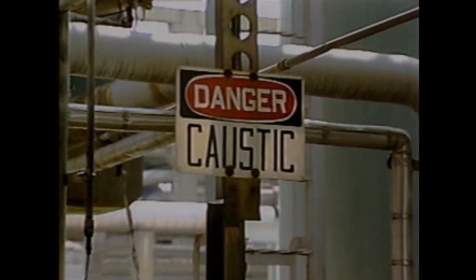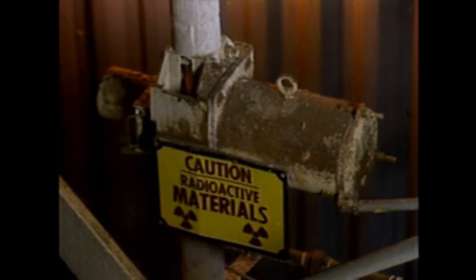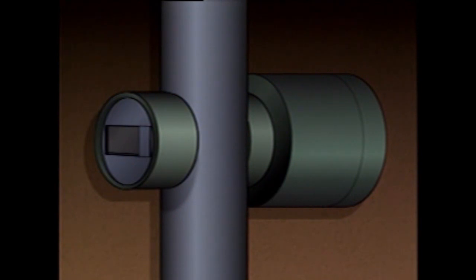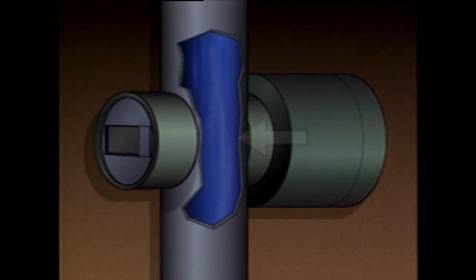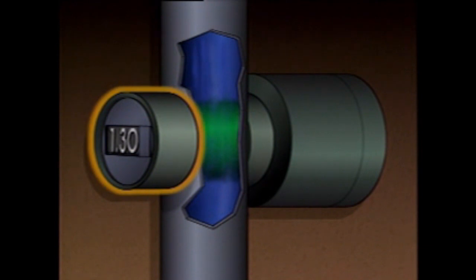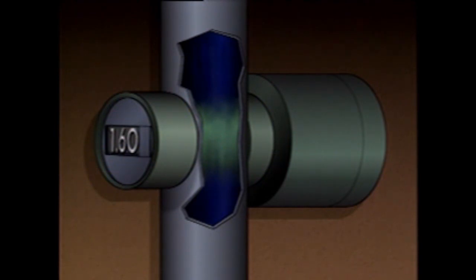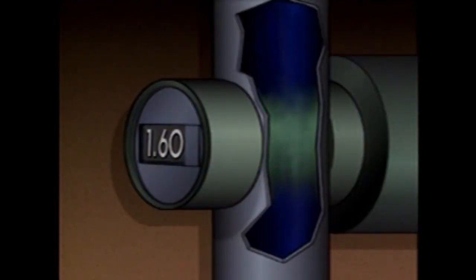Some process liquids are too corrosive for certain density measuring devices. In these situations, a radioactive density analyzer may be used. A radioactive density analyzer measures the density of a liquid without coming into direct contact with the liquid. During operation, a radiation source sends a small amount of radiation through a pipe containing the liquid being measured. The amount of radiation that reaches a detector on the other side of the pipe depends on the density of the liquid — the denser the liquid, the less radiation reaches the detector. The detector may display the radiation measurement as a density value or as a concentration value for a particular substance in the liquid.